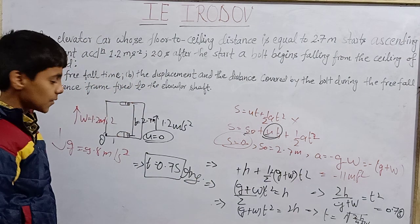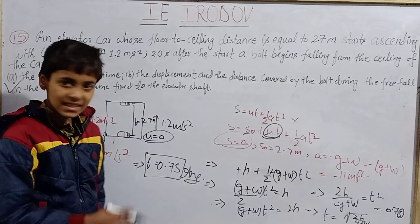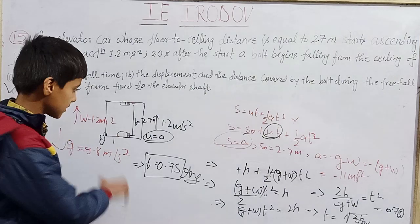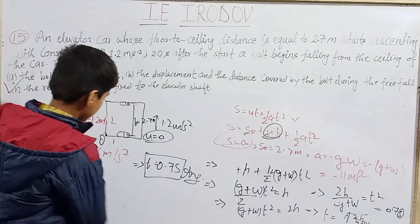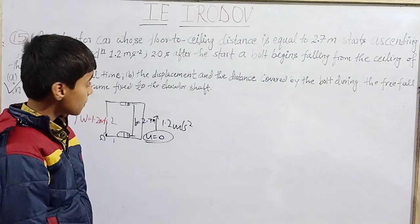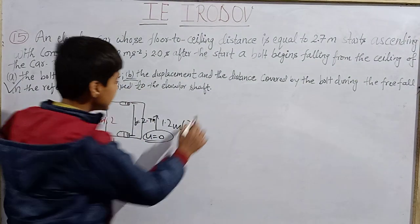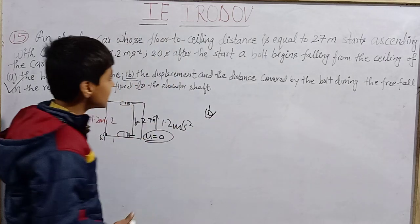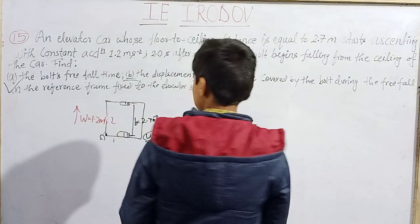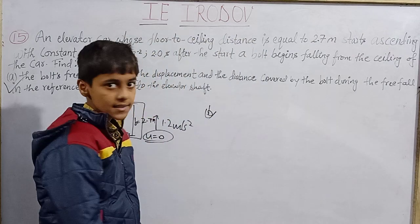So 0.7 seconds is our first answer — the bolt's free fall time. That is Part A. Now moving to Part B, which asks for the displacement and distance covered by the bolt during the free fall in the reference frame fixed to the elevator shaft.